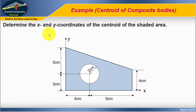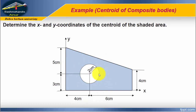We need to determine the x and y coordinates of the centroid of the shaded area. The shape is an irregular composite body. The shaded area has a hollow circular section cut out of it, and you can see the shape here with the y-coordinate reference.